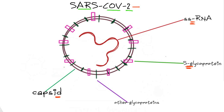The virus consists of an outer envelope called the capsid, which is formed of proteins. Within this capsid, we have certain glycoproteins embedded in it. The most important are the S-glycoproteins, because these glycoproteins act as docking molecules for the virus.